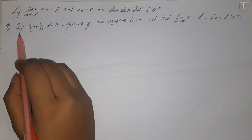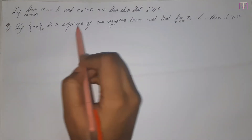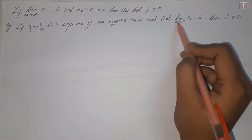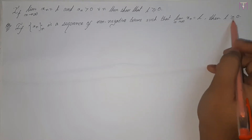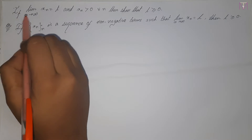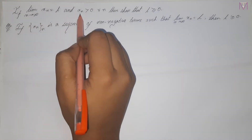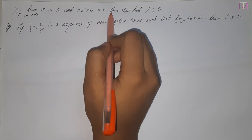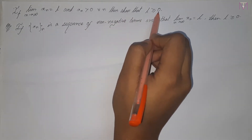This is our theorem: if xn is a sequence of non-negative terms such that the limit as n tends to infinity of xn equals l, then l is greater than or equal to 0. Or equivalently, if the limit as n tends to infinity of xn equals l and xn is greater than 0 for all n, then l is greater than or equal to 0.